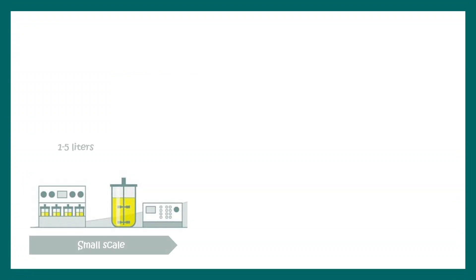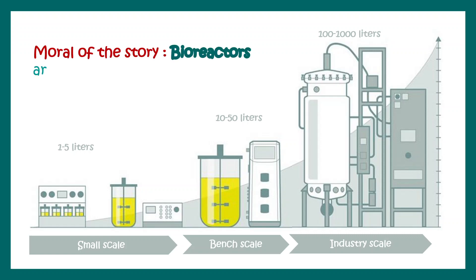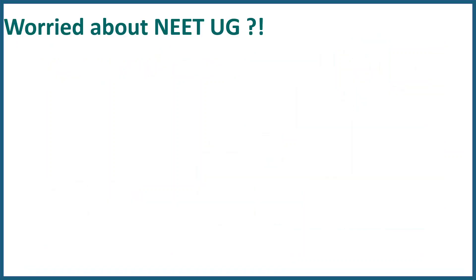So the production scale has to be increased, and that's why you need bioreactors to produce these kind of biologically relevant products in huge amounts. In small scale, you might need 1 to 5 liters of any bacterial culture. Then in industrial scale, using a bioreactor, you can generate even 1,000 liters of culture. That's really important to scale up the production. The moral of the story: bioreactors are for large-scale production, and they are generally relevant for the industry.